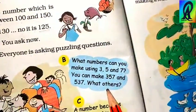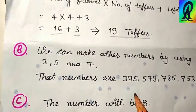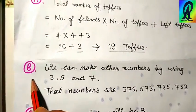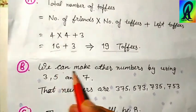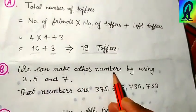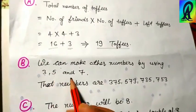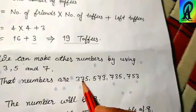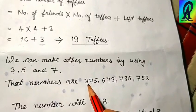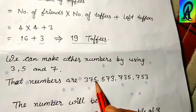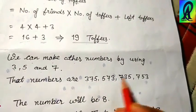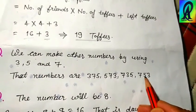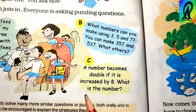The answer of puzzle B: we can make other numbers using 3, 5, and 7. These are: 375, 537, 573, 735, and 753. All six permutations of the digits 3, 5, and 7 are possible.